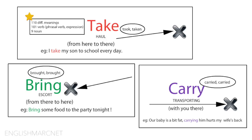So the first one is 'take,' and the most common one. It is one of the commonest verbs in English. It has 110 different meanings, from which 101 is a verb, phrasal verb, or expression — used in expressions, in idioms, in phrasal verbs, 101 times. And it can also be a noun with nine different meanings.